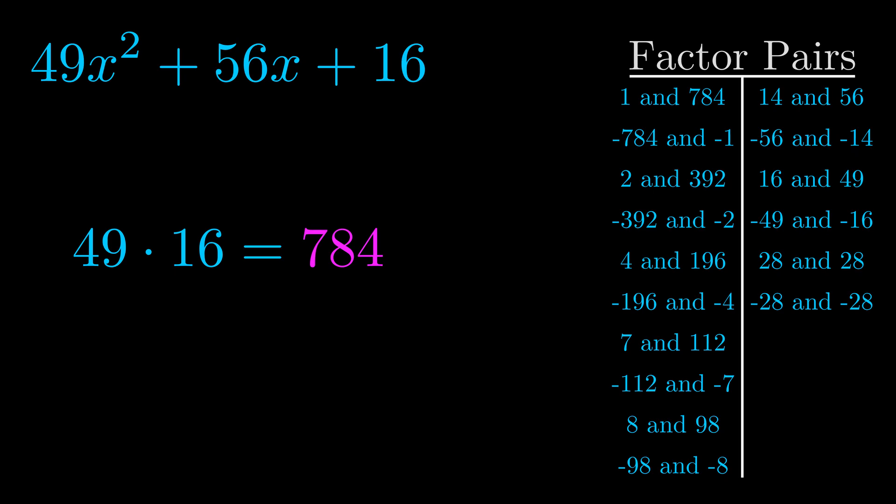The b value is the coefficient on the x term. That's the middle term, the one that we haven't done anything with yet. And really this is the only factor pair that we need.